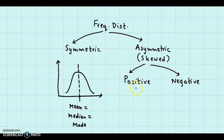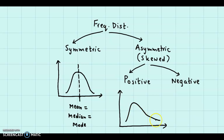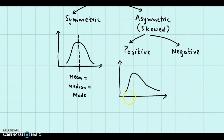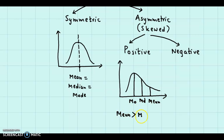Let us see how a positively skewed distribution looks like. Let us draw the x and y-axis. In this case, the distribution will have a positive tail — you would have more frequencies on the positive side. We say the distribution has a positive tail. In this case, this would be the mode, then we will have the median, and then we will have the mean. So, mean is greater than the median is greater than the mode. This is the case of a positively skewed distribution.